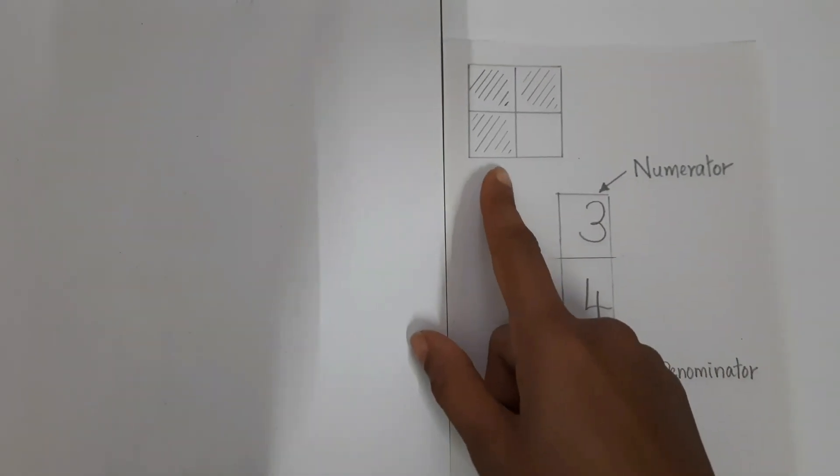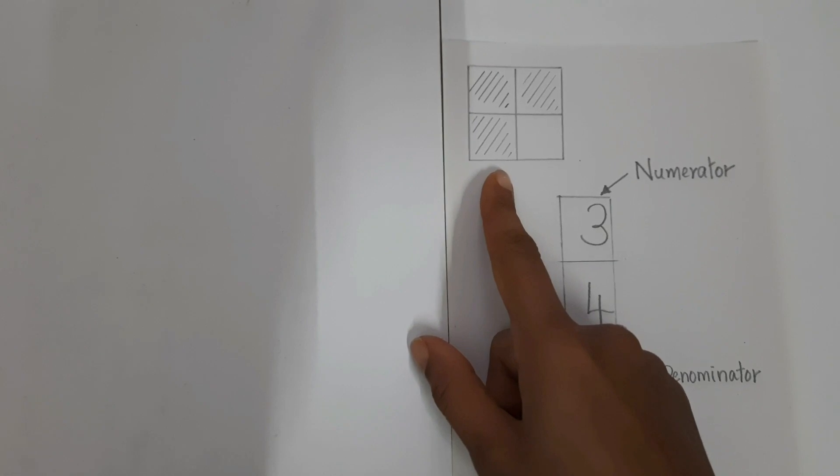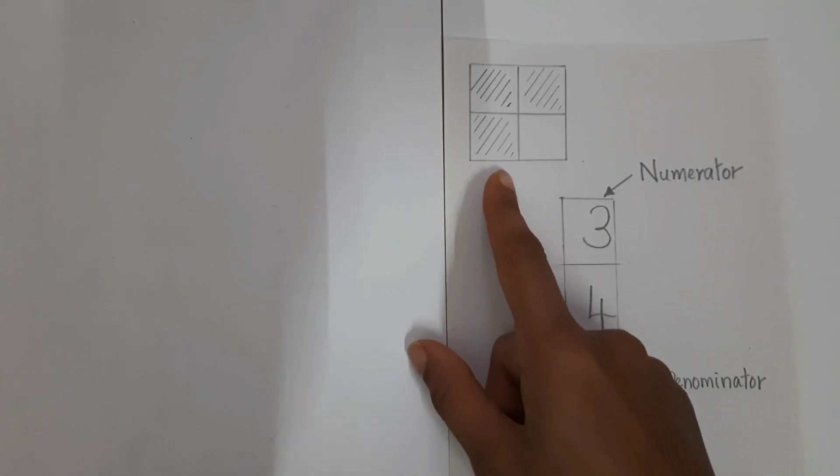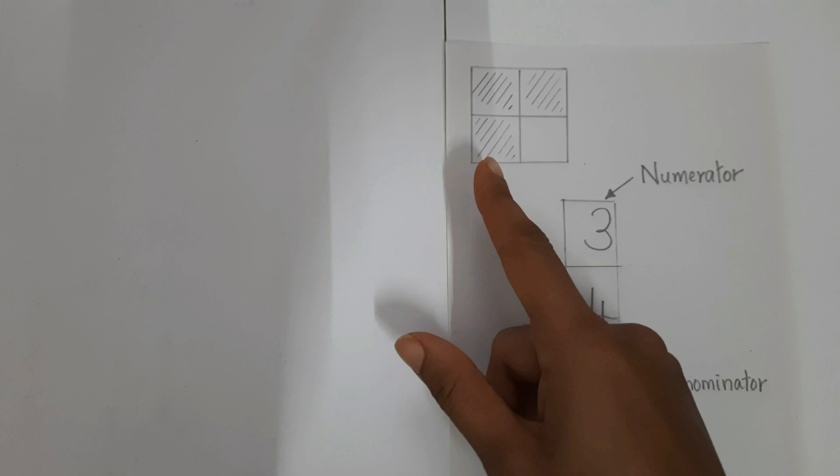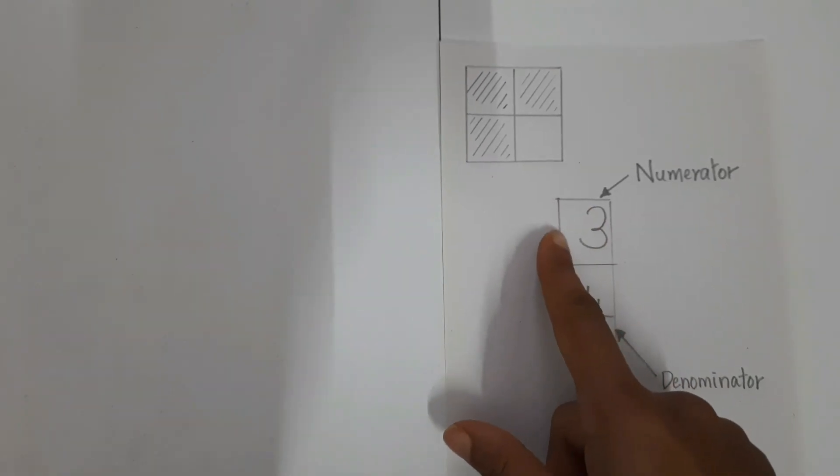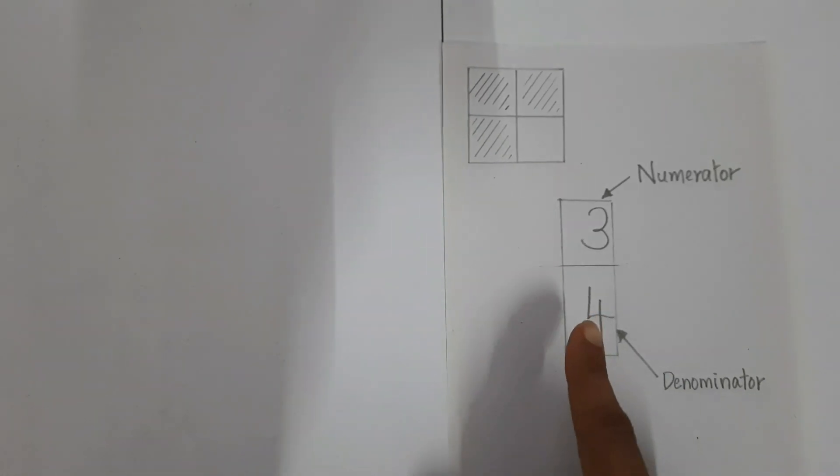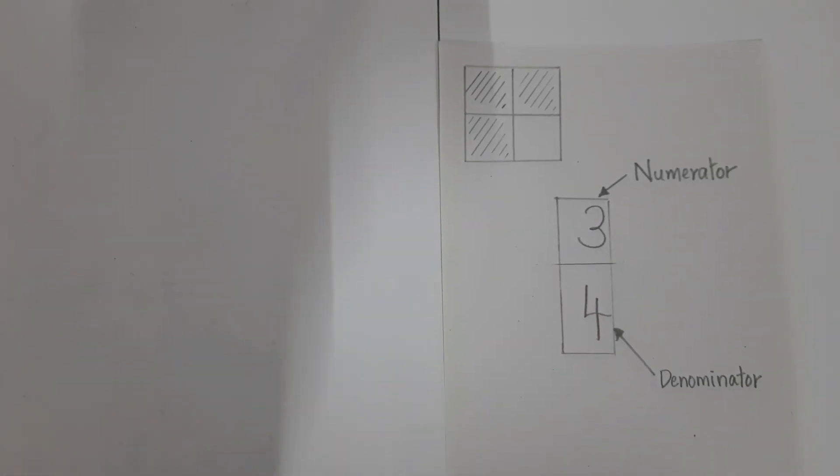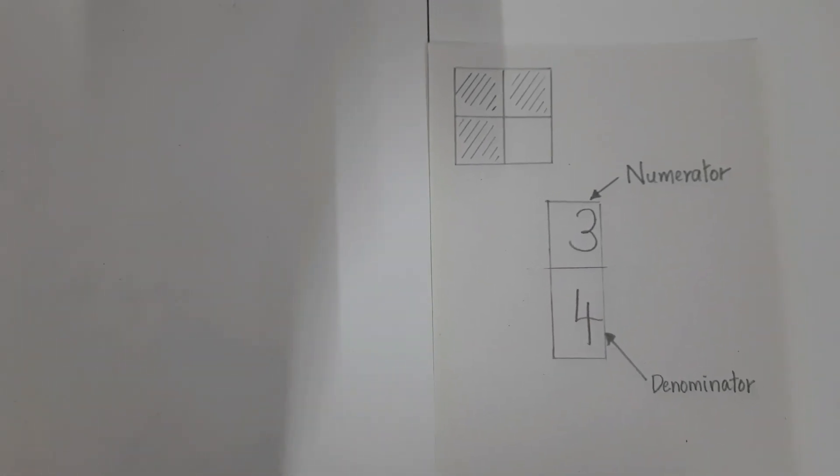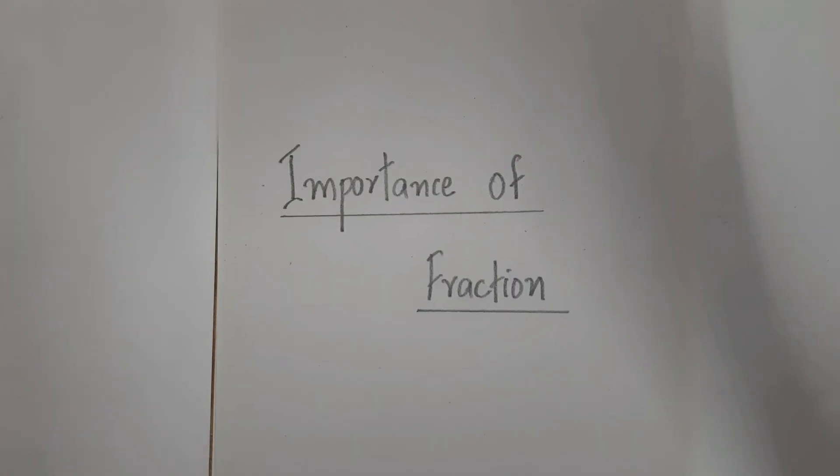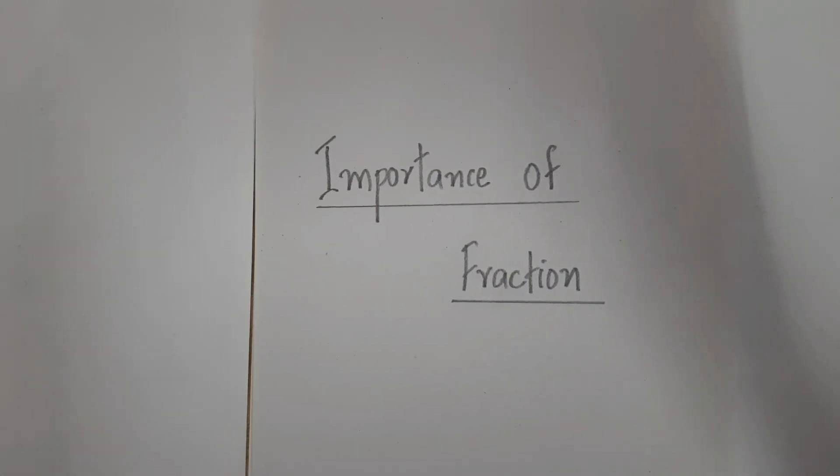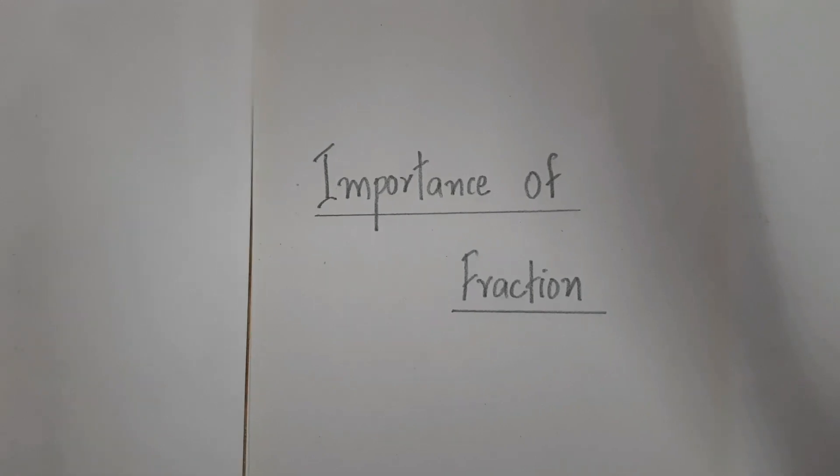From this picture, the number of parts that are shaded is 3, which is the numerator, and the total number of parts is 4. So the answer is 3 by 4. Fractions are important because they tell you what portion of a whole you need, have, or want.